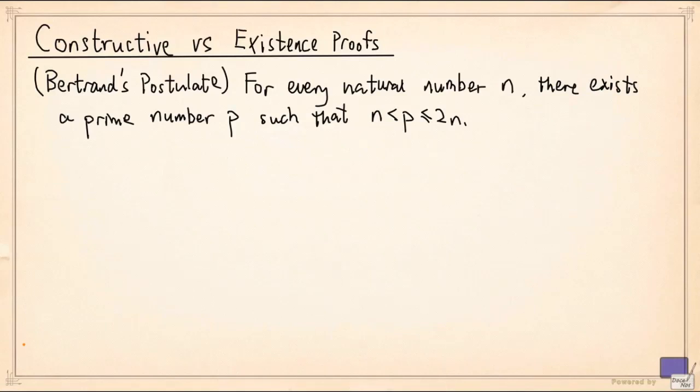In mathematics, there are constructive proofs and existence proofs. Existence proofs are also known as non-constructive proofs or existential proofs. These proofs establish that mathematical objects satisfying certain properties exist.